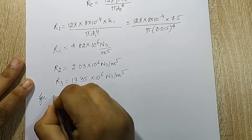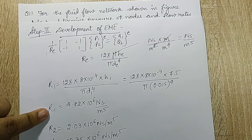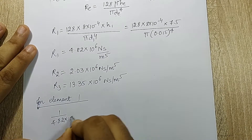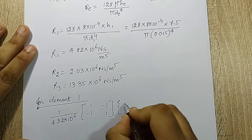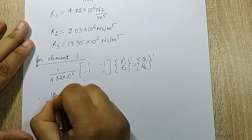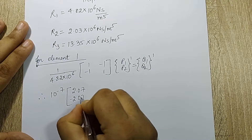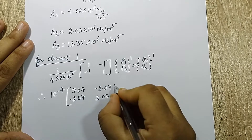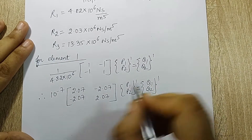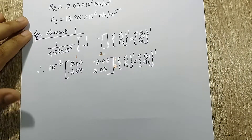For element 1, the EME is (1/R1) × [1, −1; −1, 1] × {p1, p2} = {q1, q2}. With R1 = 4.82×10⁶, this becomes 10⁻⁷ × 2.07 × [1, −1; −1, 1]. Element 1 connects nodes 1 and 2.